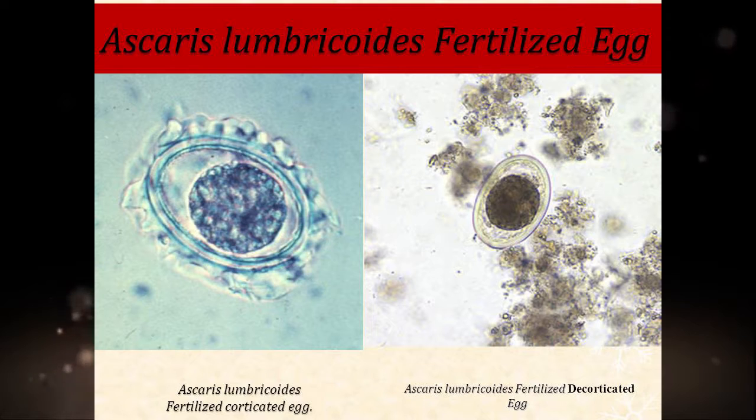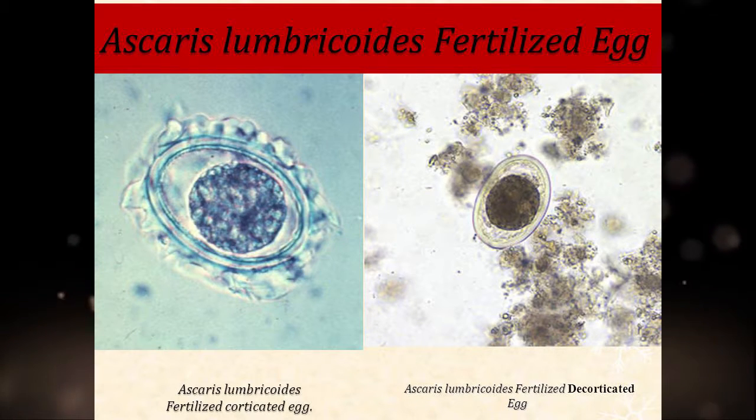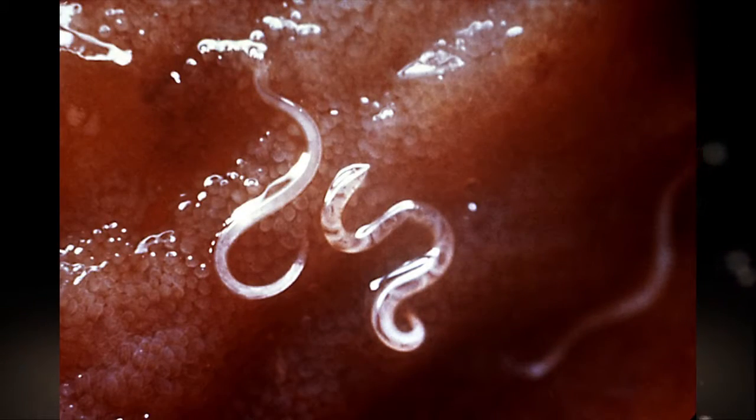Ascaris Lumbricoides fertile eggs are oval or round in shape, have a thick shell, and the outer cover has an outer coarsely mammillated albuminous coat.